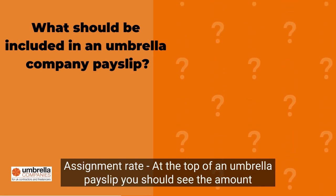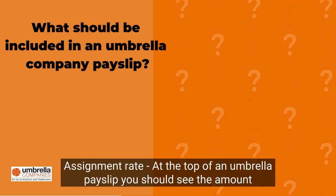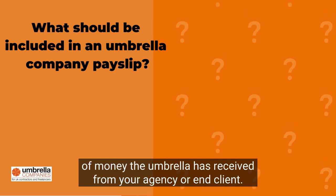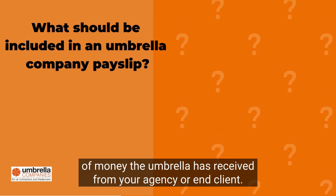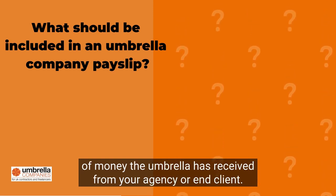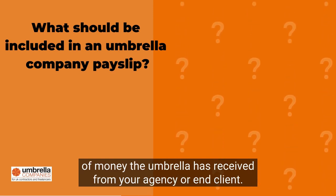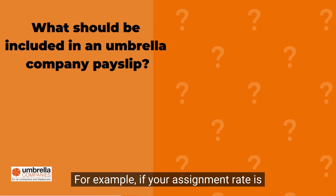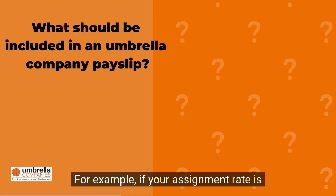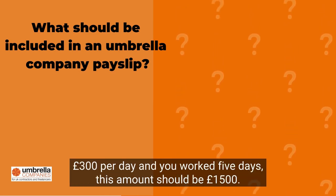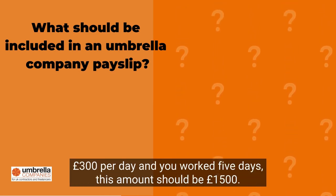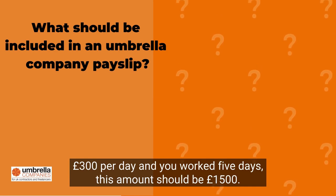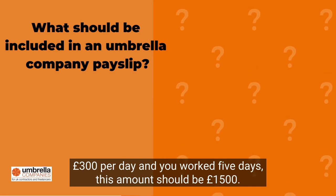Assignment rate: at the top of an umbrella payslip, you should see the amount of money the umbrella has received from your agency or end client. For example, if your assignment rate is £300 per day and you worked 5 days, this amount should be £1,500.